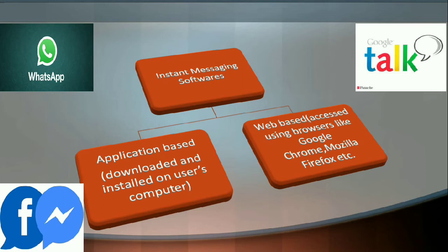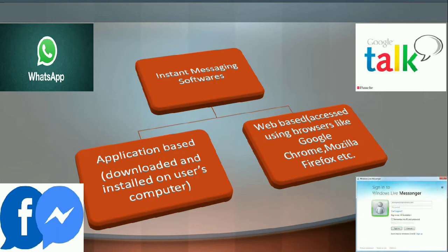For web-based softwares, you open your web browser, type the name of the software — for example, Google Talk or Windows Live Messenger — and then sign in using your ID and password. To revise: application-based softwares need to be downloaded and installed before they can be used, while web-based softwares are accessed directly using web browsers.